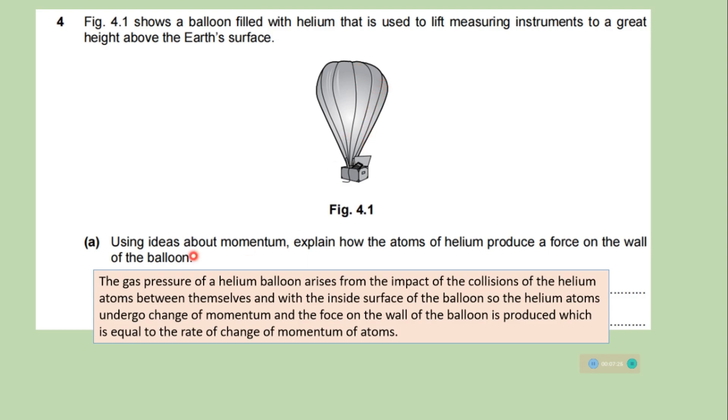This figure shows a balloon filled with helium that is used to lift measuring instruments to a great height above the earth's surface. Using ideas about momentum, explain how the atoms of helium produce a force on the wall of the balloon. So the gas pressure of a helium balloon arises from the impact of the collision of the helium atoms between themselves and with the inside surface of the balloon. So the helium atoms undergo changes of momentum. And the force on the wall of the balloon is produced, which is equal to, because we know that force is equal to rate of change of momentum. So the force is produced, which is equal to the rate of change of momentum of atoms.